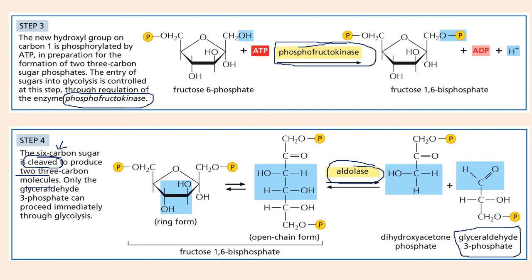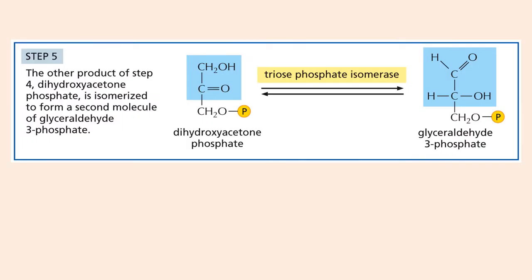In step 5, dihydroxyacetone phosphate is isomerized and converted into glyceraldehyde 3-phosphate using the triose phosphate isomerase enzyme. This ensures both three-carbon products from step 4 can proceed through the remaining steps of glycolysis, allowing maximum energy extraction from the original glucose molecule.